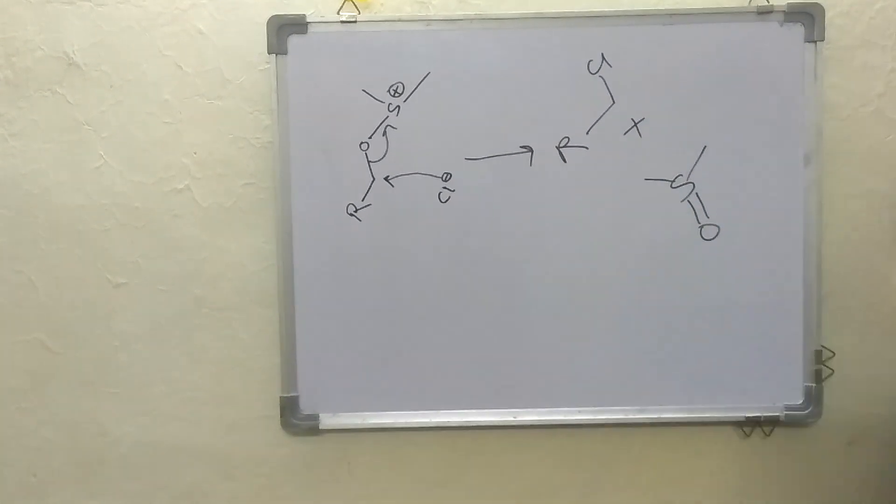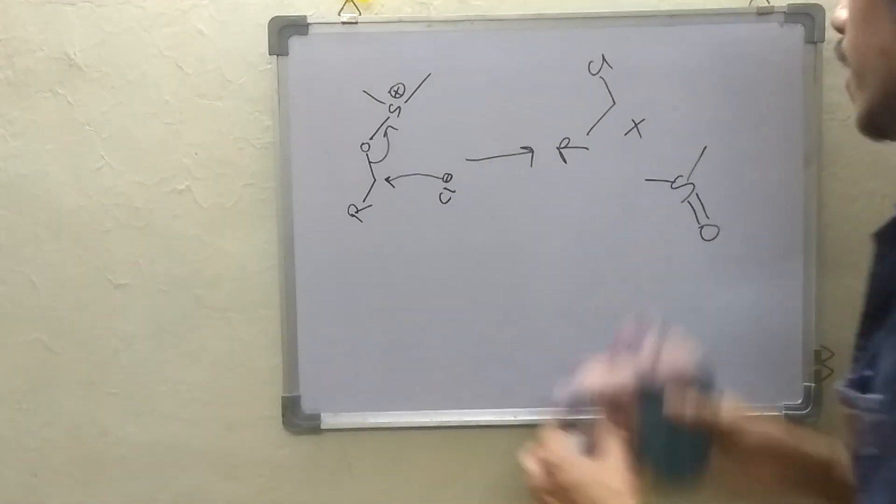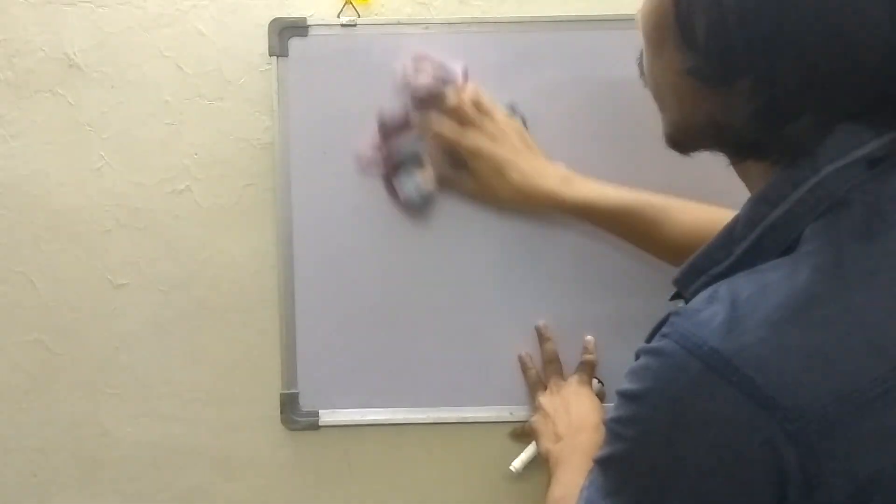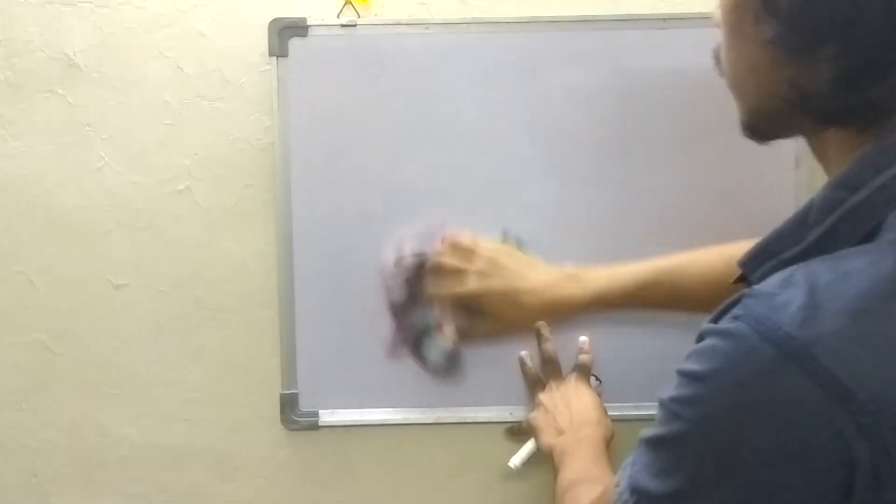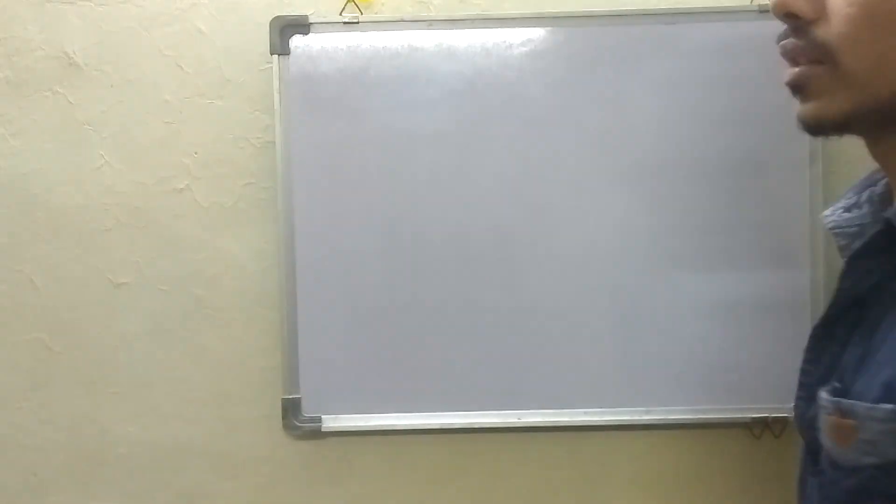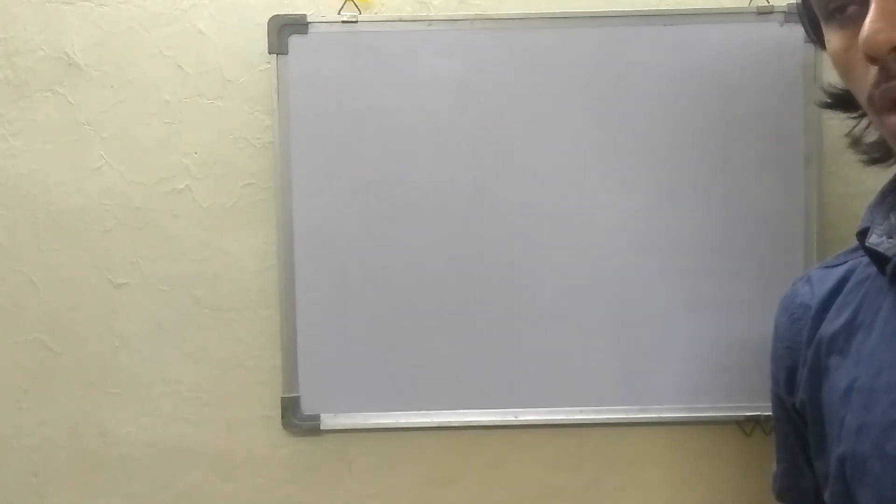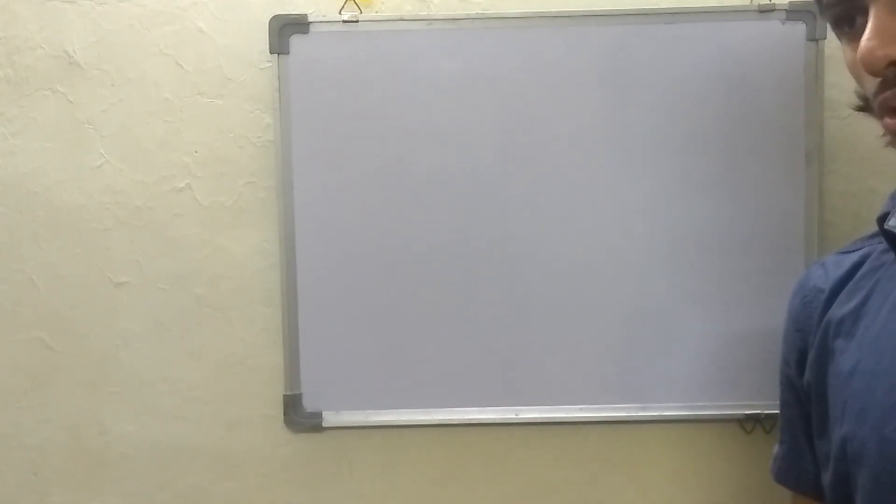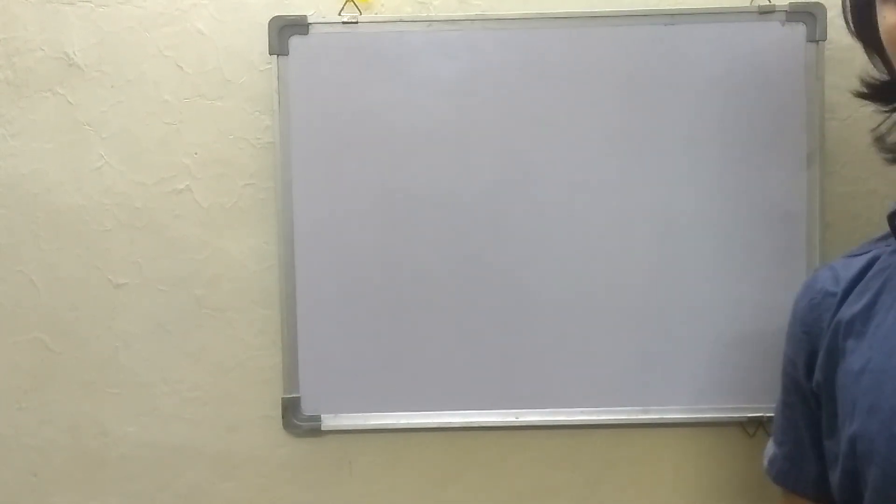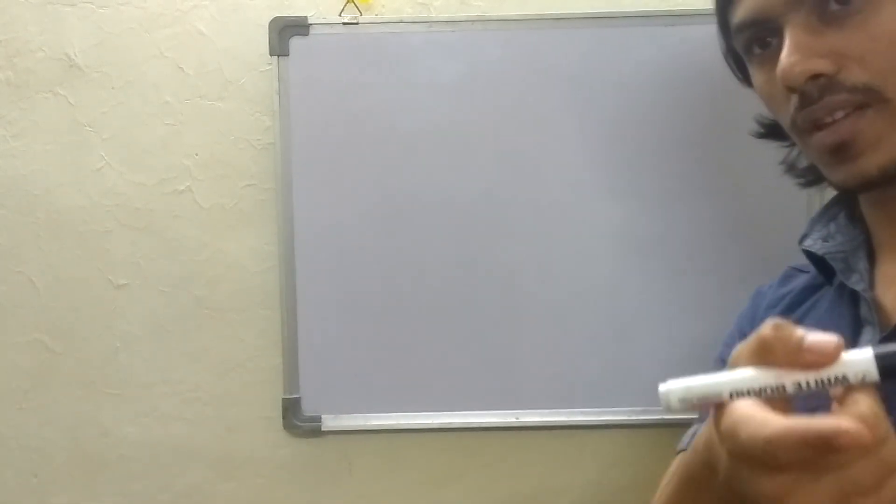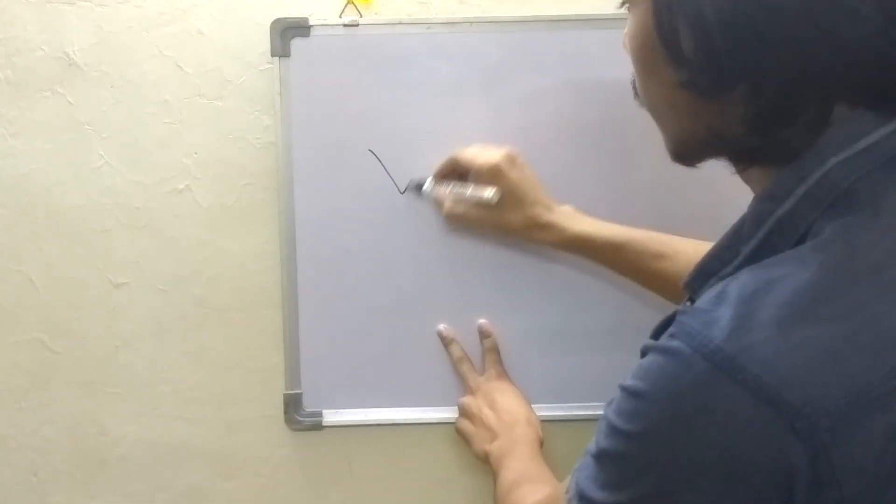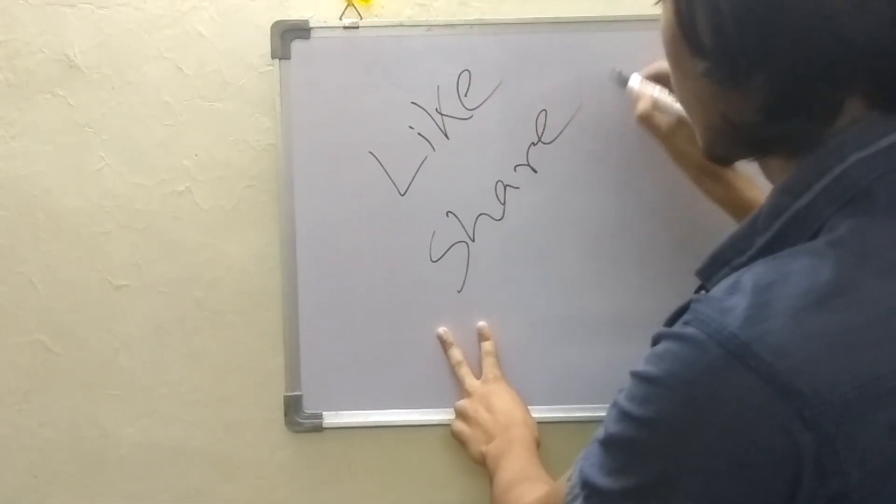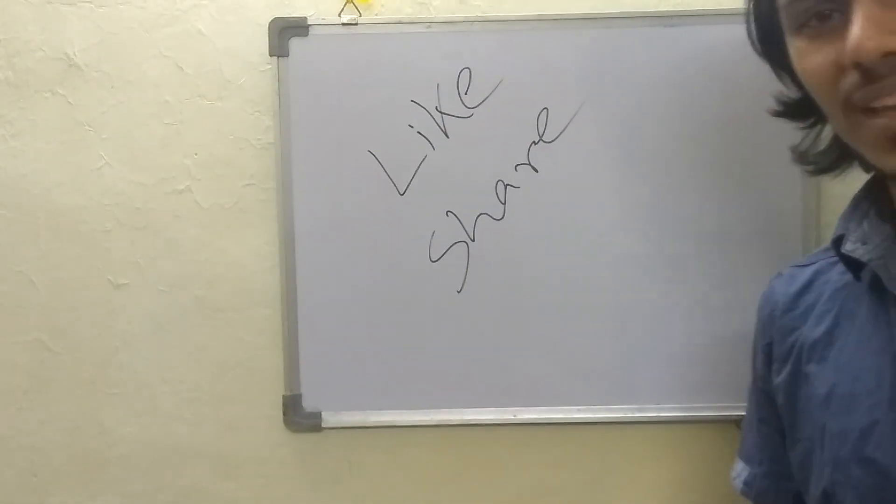This Swern oxidation is a very useful reaction because the reaction condition is very mild and the separation of the product is easy because all the side products form like carbon monoxide or carbon dioxide - they are gaseous so separation of product is bit easier. So that's all. If you like my video then please like, share and subscribe. Thank you.